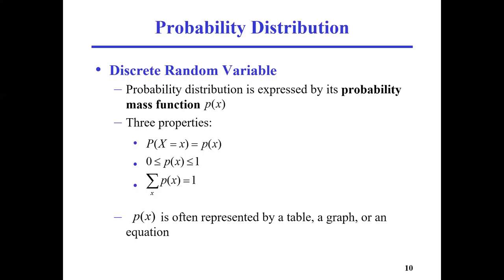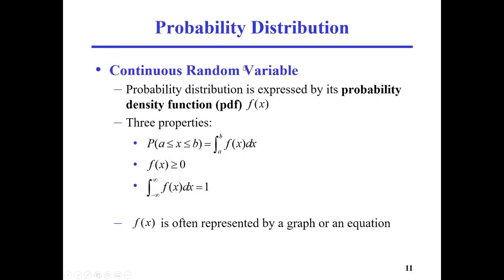This is for discrete random variables — we have the probability mass function, p(x). For continuous random variables, it's more complex. We use a function called probability density function instead of mass function. We call it PDF — not the document extension, but short for probability density function.